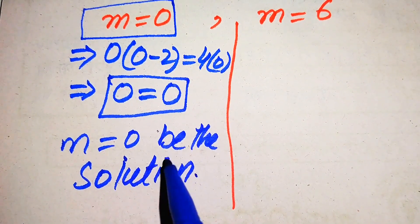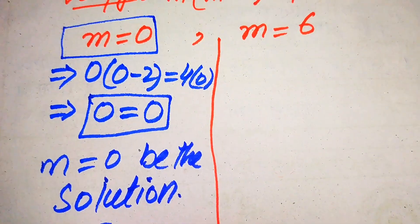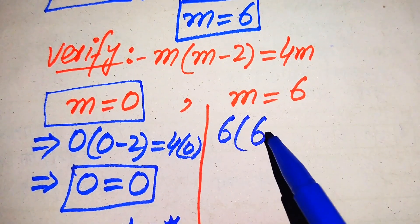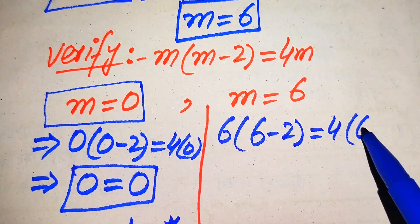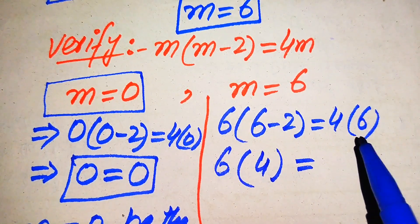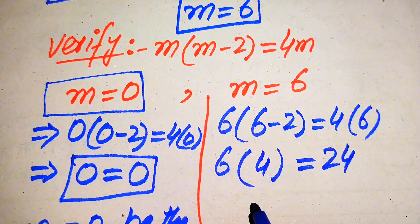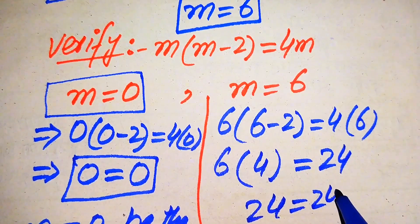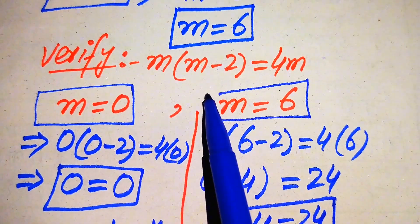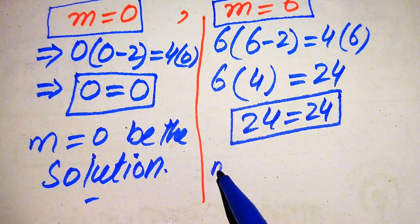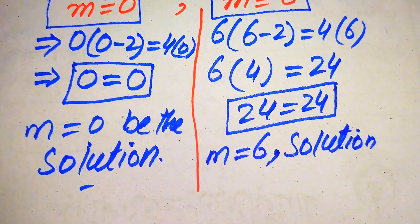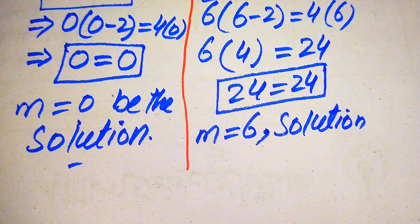Now we verify the second root. When we put m equals to 6 into the given equation, it becomes 6 times of 6 minus 2 equals to 4 times of 6. That gives 6 times of 4 equals 24, and 4 times of 6 also equals 24. Left hand side equals right hand side, so m equals 6 also satisfies the given equation and is a solution.